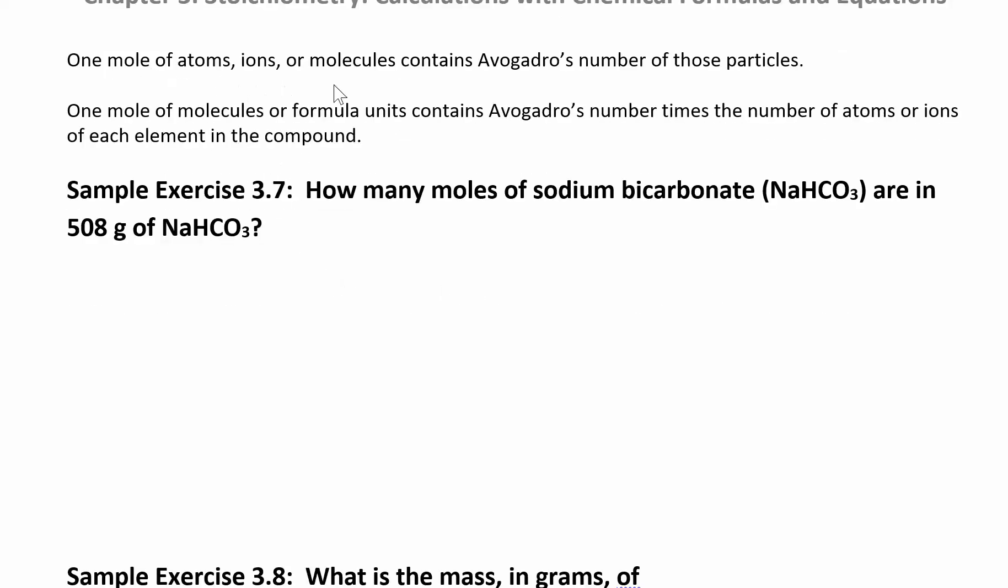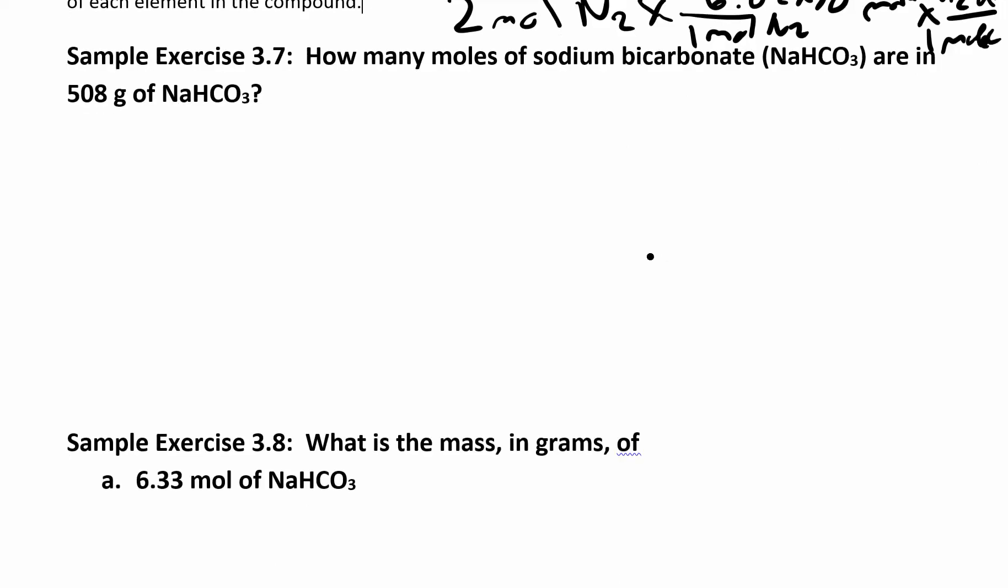One mole of atoms, ions, or molecules contains Avogadro's number, which is 6.02 times 10 to the 23. One mole of molecules or formula units contains Avogadro's number times the number of atoms. So if we had two moles of nitrogen, then I know in every one mole of nitrogen, I have 6.02 times 10 to the 23 molecules. And for every one molecule, I have two atoms.